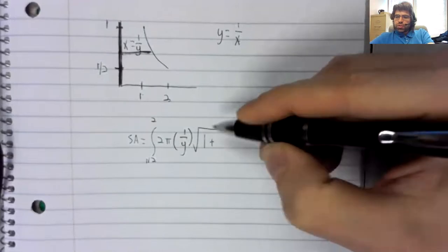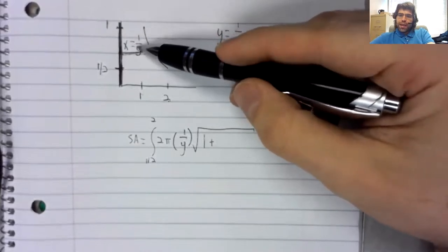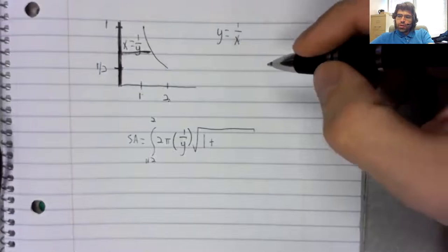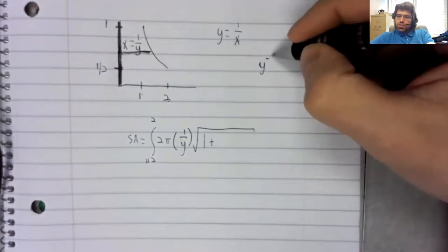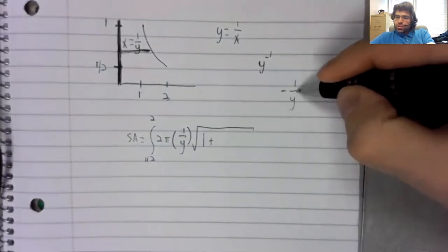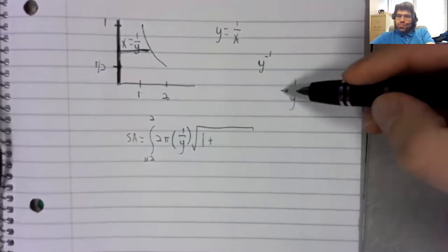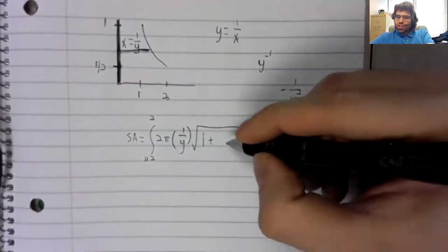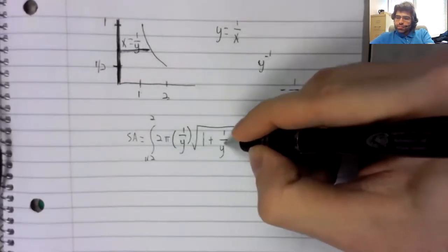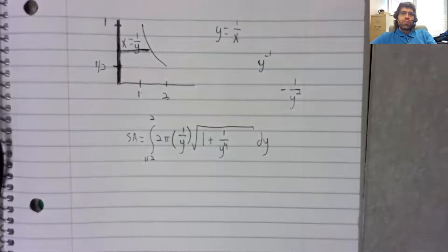So the derivative of 1 over y, that's y to the negative first. Its derivative is negative 1 over y squared. When we square this, a negative squared is positive. So we just get 1 over y to the fourth dy.